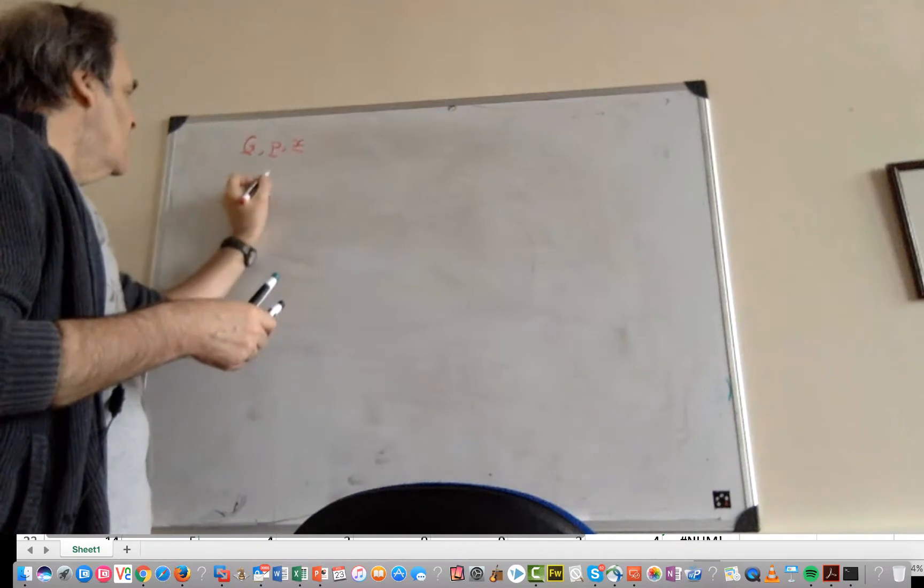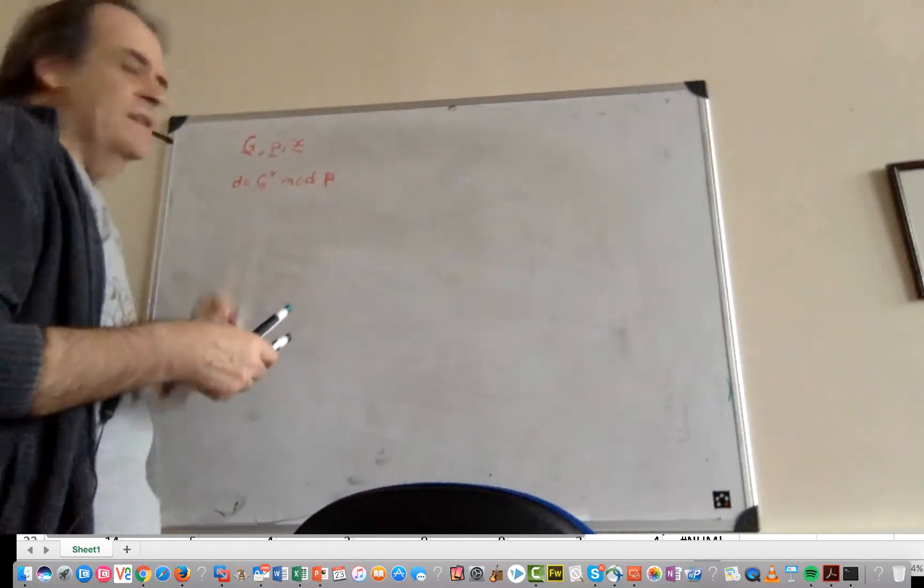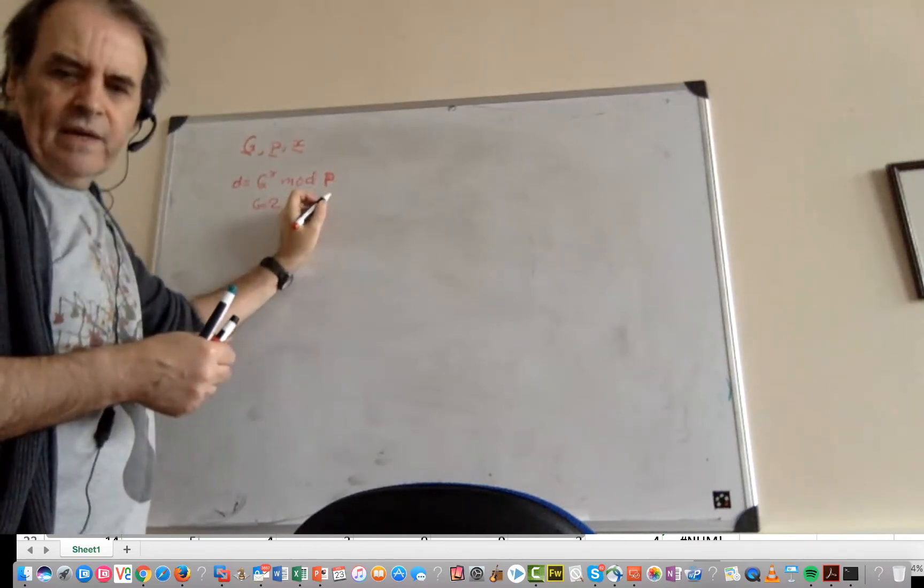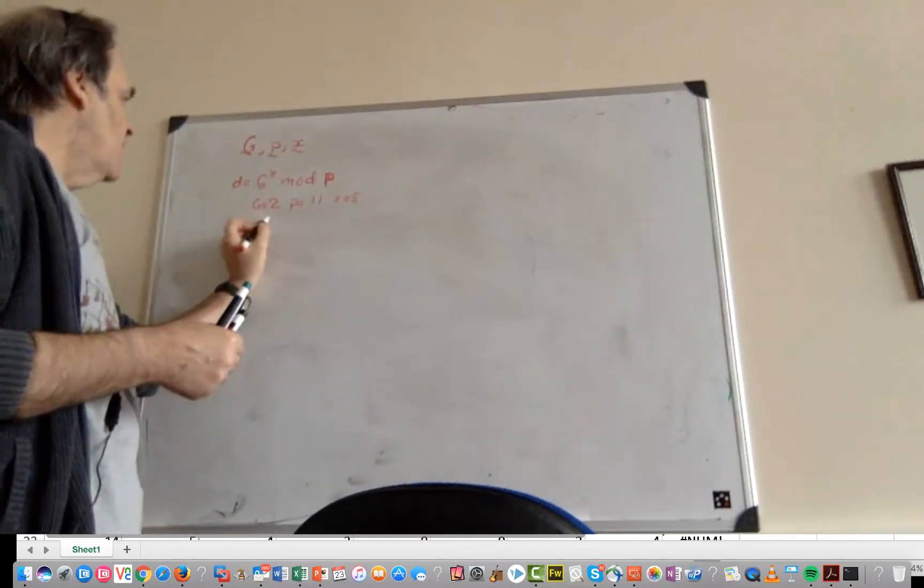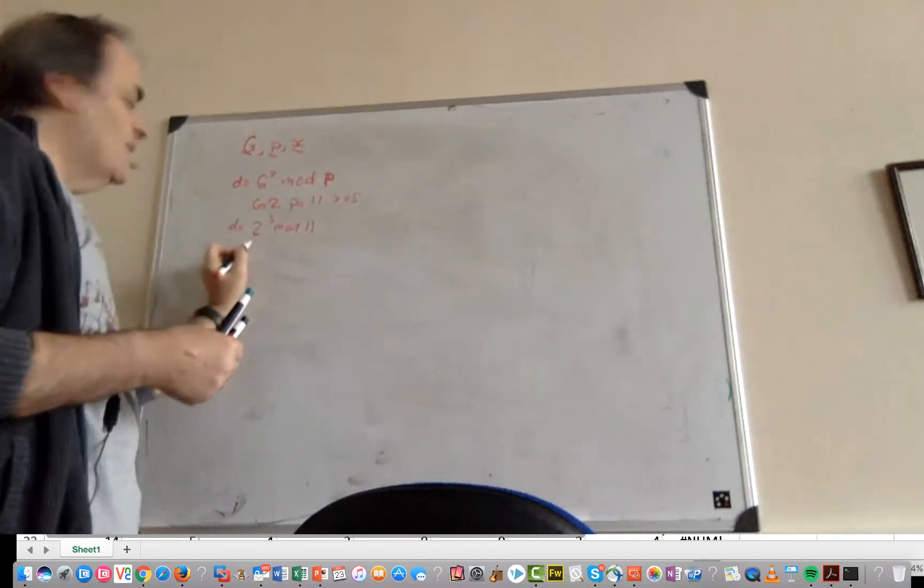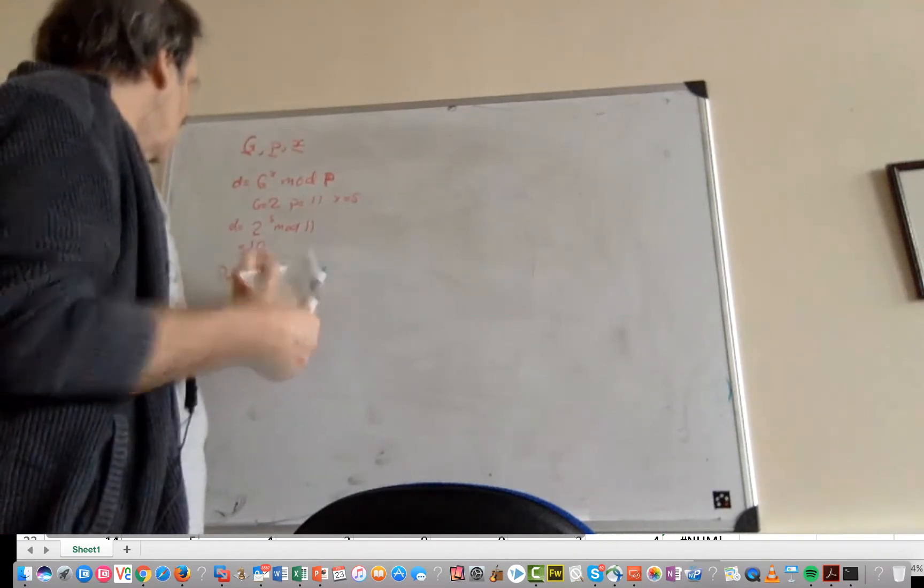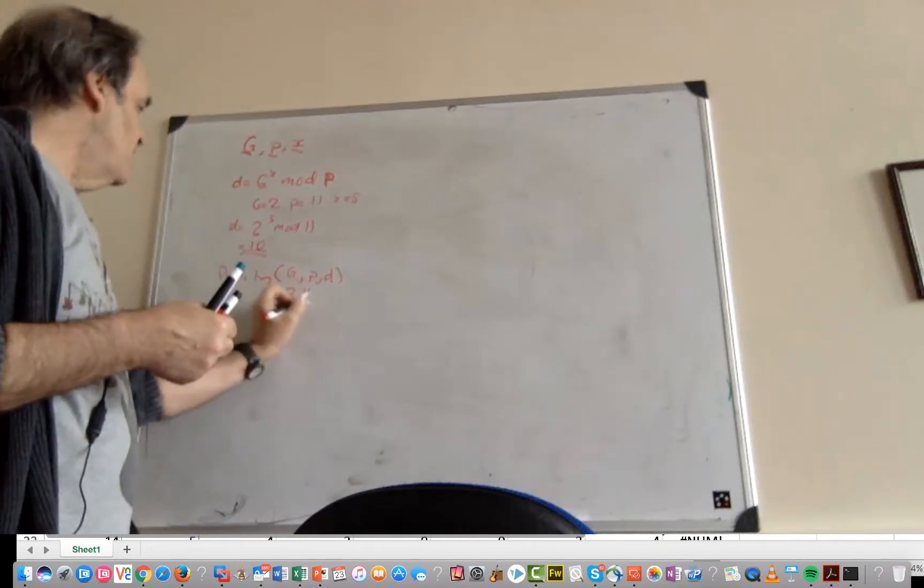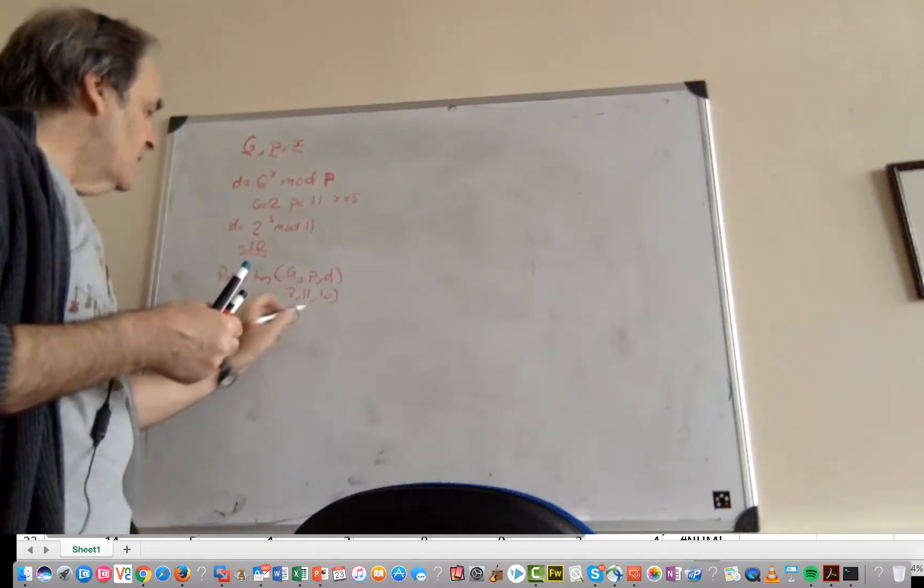We calculate a D value with this calculation. If we take G equals 2, P equals 11, and X equals 5, then D becomes 2 to the power of 5 mod 11, which gives us 10. Our public key becomes G, P, and D, or 2, 11, and 10, and our private key becomes our X value, which is 5.